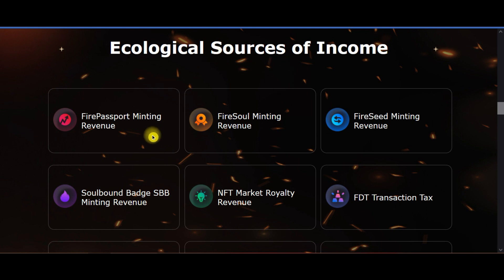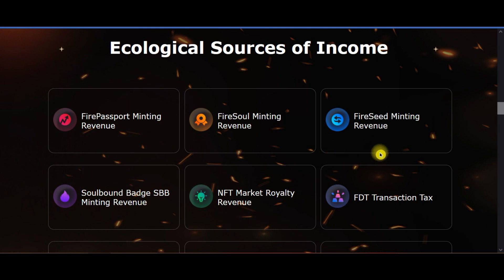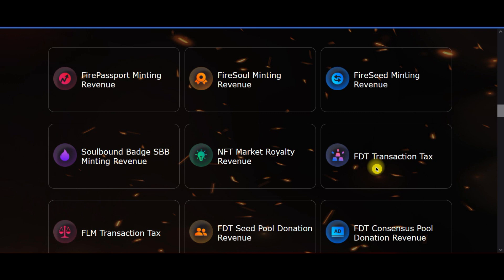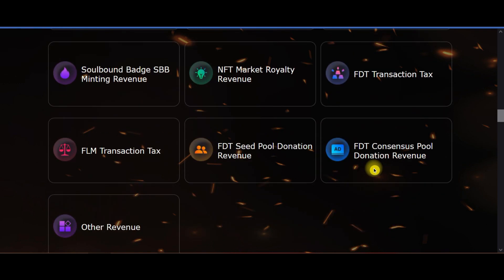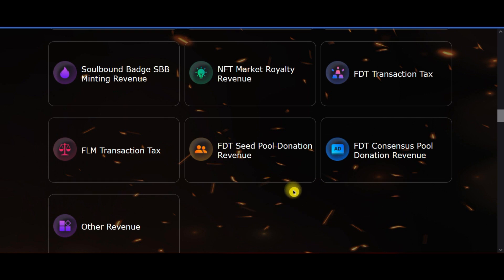The income sources include: Fire Passport Minting Revenue, Soul Bond Wage, SBB Minting Revenue, Fire Soul Minting Revenue, NFT Market Royalty Revenue, Fire Seed Minting Revenue, FDT Transaction Tax, FLM Transaction Tax, FDT Seed Pool Donation Revenue, and FDT Consent Seed Pool Donation Revenue.